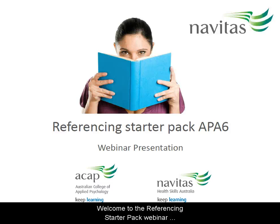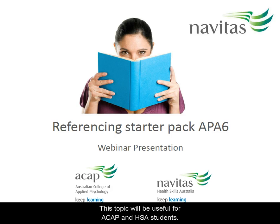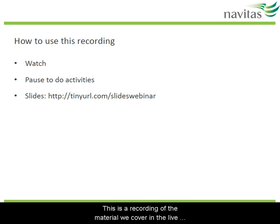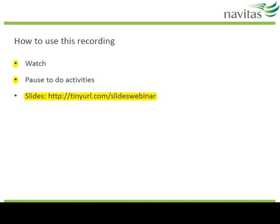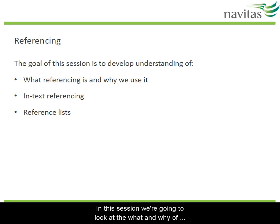Welcome to the Referencing Starter Pack webinar recording for APA 6 referencing. This topic will be useful for ACAP and HSA students. This is a recording of the material we cover in the live webinar. You may want to watch the video straight through or use the pause button to stop and do the activities. The webinar slides are available at this link. In this session we're going to look at the what and why of referencing, and then how to do in-text referencing and reference lists.